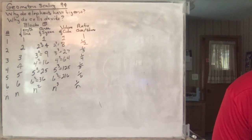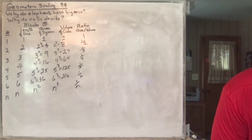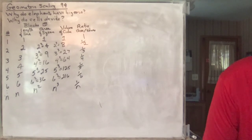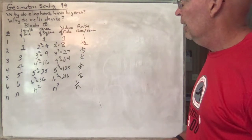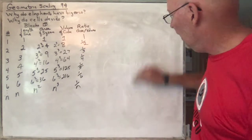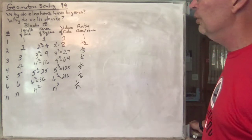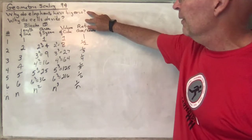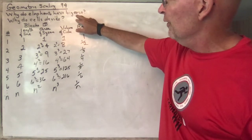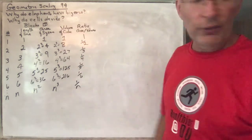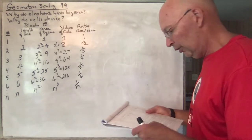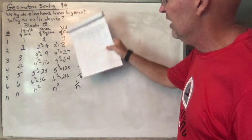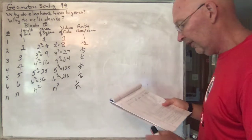Circle, sphere: surface area is 4πr squared, volume is 4/3 πr cubed, and so on. So why is this important? What does this have to do with these two questions: why do elephants have big ears, and why do cells divide? These are just a couple of examples — there are all sorts of things in the world that this has a lot to do with why they look the way they do.